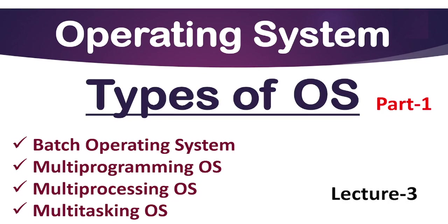Hello students, welcome back to the channel. In this video we will be discussing about different types of operating systems. We have more than 8 types of operating systems that are very important for college level examinations. In this video we will cover only 4 most expected types that includes batch operating system, multi-programming, multi-processing and multi-tasking operating systems.